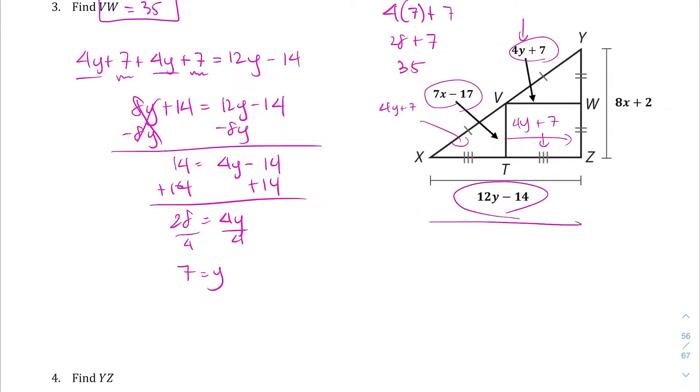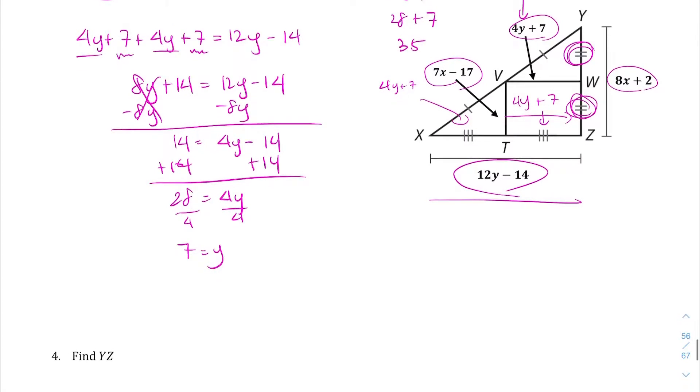We can bring that over here. If that's 7X minus 17, this is 7X minus 17 too. So combine those, set them equal to 8X plus 2. So 7X minus 17 plus 7X minus 17 is going to equal 8X plus 2.